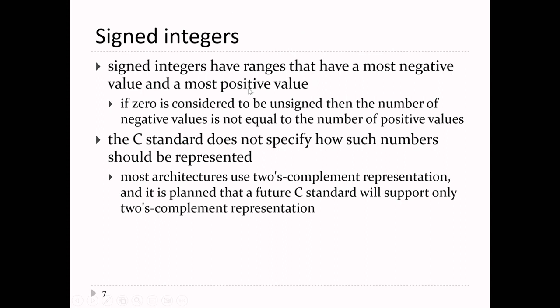Now what about the signed integer values? The signed integer values have values ranging from some most negative value up to some most positive value. Everything's binary, so every digit of your binary number can have one of two different values. For an 8-bit number, there are a total of 2 to the 8 different binary values. That means there's an even number of binary values for any number of bits.